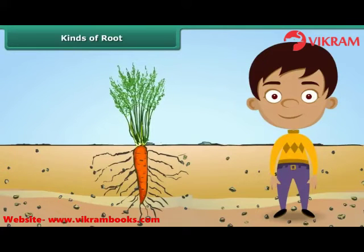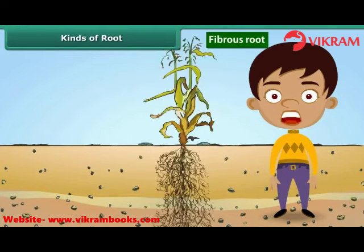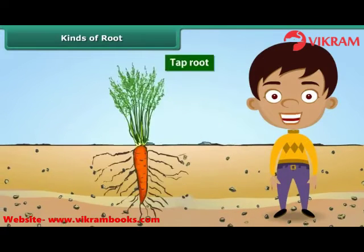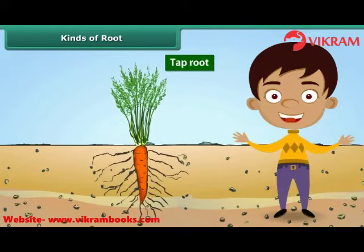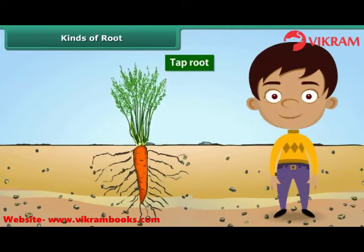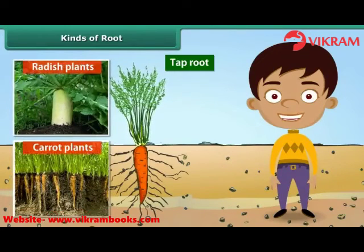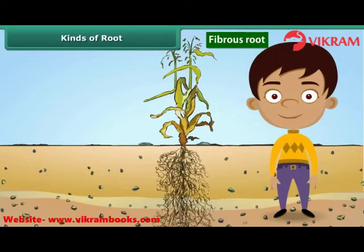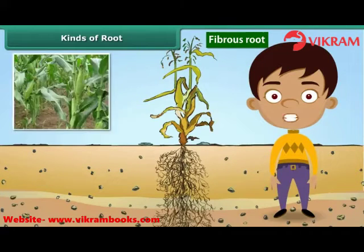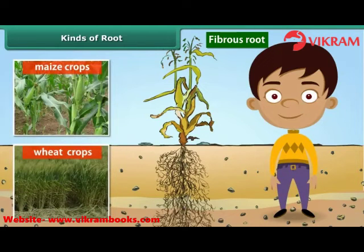Roots are of two types: tap roots and fibrous roots. A tap root is a single large root that grows straight down deep into the soil. A few small roots that branch from it are called lateral roots — for example, roots found in radish and carrot plants. Fibrous roots, on the other hand, are a cluster of fine roots that spread into the soil — for example, roots found in maize and wheat. A fibrous root has no main root.